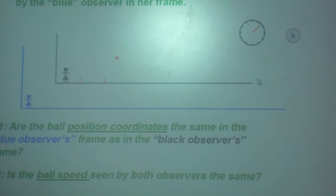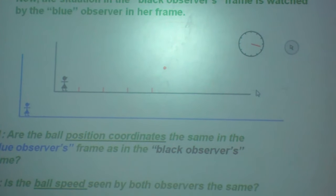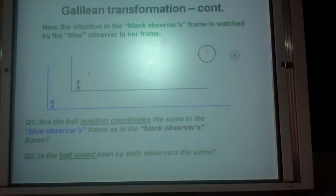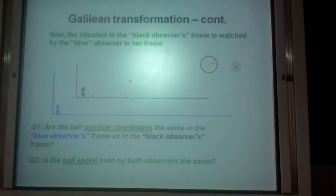Are the ball position coordinates the same in the blue observer's plane as is measured in the black observer's plane? Is the ball speed seen by both observers the same? The black observer is moving. He is making a coordinates measurement, he is also making a velocity measurement. Are they the same in both the frames of reference or not?